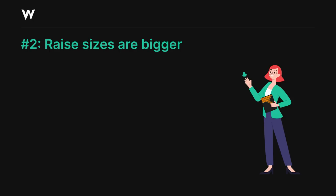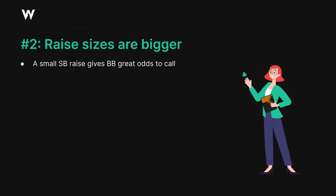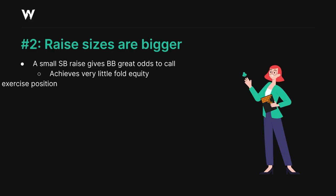Another thing we need to consider about blind vs blind spots is that the raise sizings we'll be using from both positions are much larger than in other situations, and for slightly different reasons in each case. From the small blind, a small raise — for example our usual 2 or 2.2 big blinds — would achieve very little fold equity, given that the big blind would be getting an extremely good price to call and realize equity with many hands.